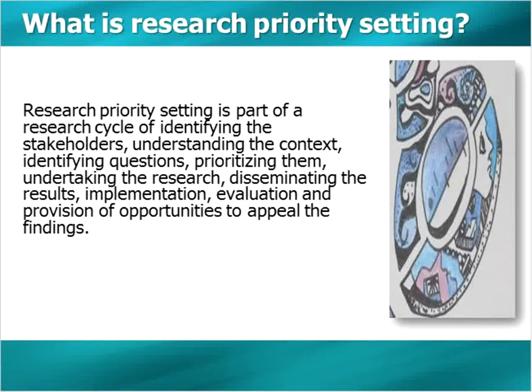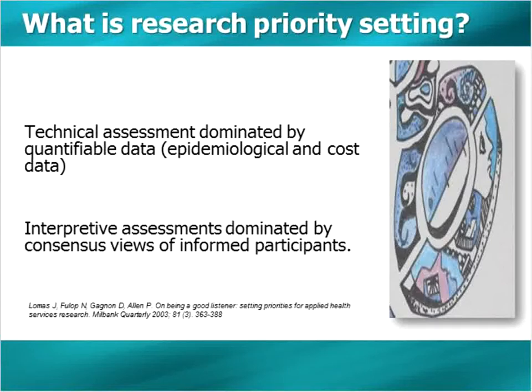Erin has given you an overview of how research priority setting fits in a bigger research cycle. In order to define it more clearly, we need some categorization of how research priority setting can be categorized. One general way is quantitative technical approaches, which use data like burden of disease and economic data to make decisions, and interpretive assessments, which use a qualitative base involving different stakeholders and their views in priority settings. Of course, you can also use a mixed method approach.